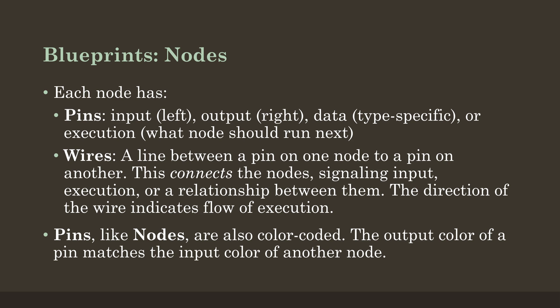Nodes are connected between their pins using wires, represented as a line between the pin on one node and a pin on another node. This signals various things depending on the nodes and the pins — it might signal input, output, or execution, but if nothing else it signals a relationship between them. The direction of the wire also indicates the flow of execution. In most cases, execution moves from left to right, corresponding to the left input and right output. The wires will always indicate both the direction and the relationship between different nodes.